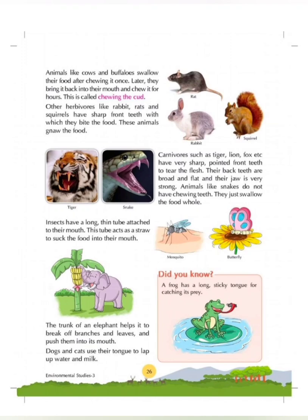The trunk of an elephant helps it to break off branches and leaves and push them into their mouth. The long trunk of the elephant acts as a hand — it helps them to break off branches, pluck the leaves and put them into their mouth.